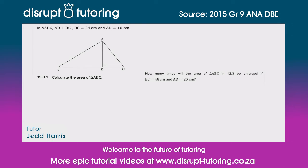Hey guys, it's Jed here from Disrupt Tutoring, and as always it's such a pleasure to join you today. We're going to deal with the following question: in triangle ABC, AD is perpendicular to BC.